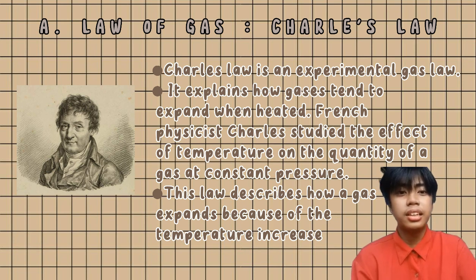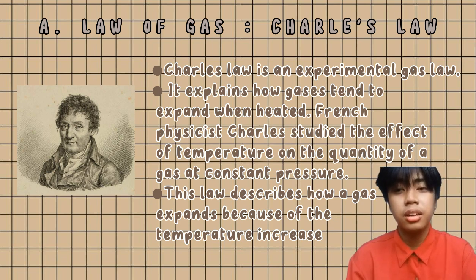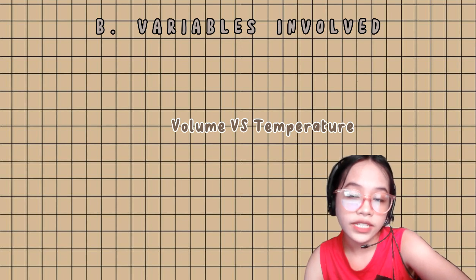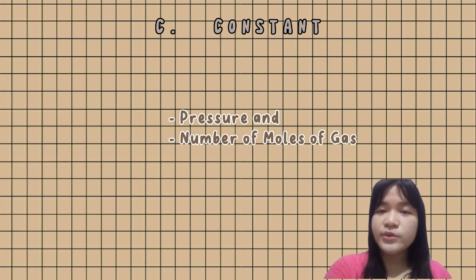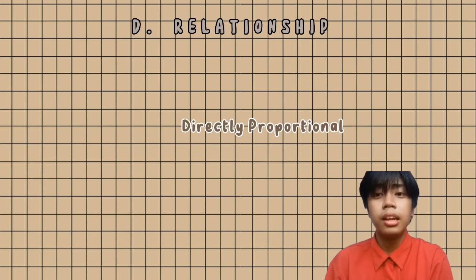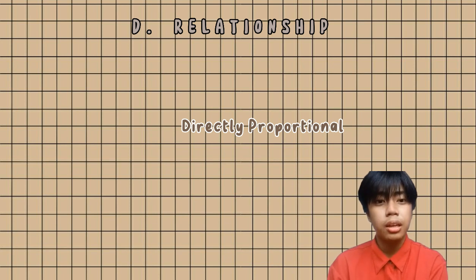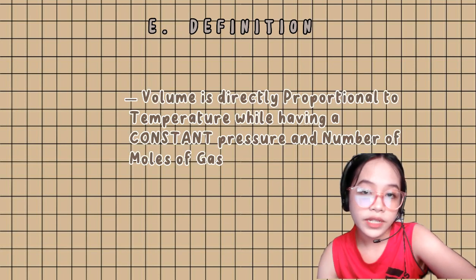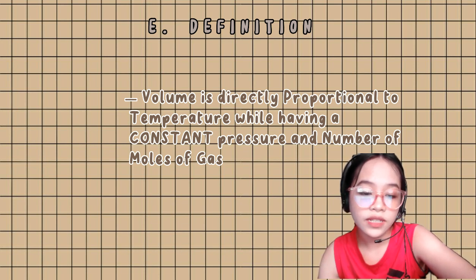Conversely, a decrease in temperature will cause a decrease in volume. The most involved in Charles' Law is temperature versus volume, pressure, and number of moles of gas. The relationship between the volume and temperature is directly proportional. Volume is directly proportional to temperature while having constant pressure and number of moles of gas.